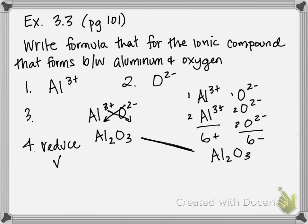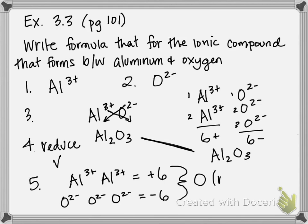And step 5 is to check to make sure that our charges are going to cancel out. If I have 2 aluminums, Al3+, Al3+, that gives me an overall charge of +6. And if I have 3 oxygens, O2-, O2-, O2-, that's going to give me an overall charge of -6. If you add the two of those together, it's going to be 0, aka neutral, and that checks out.